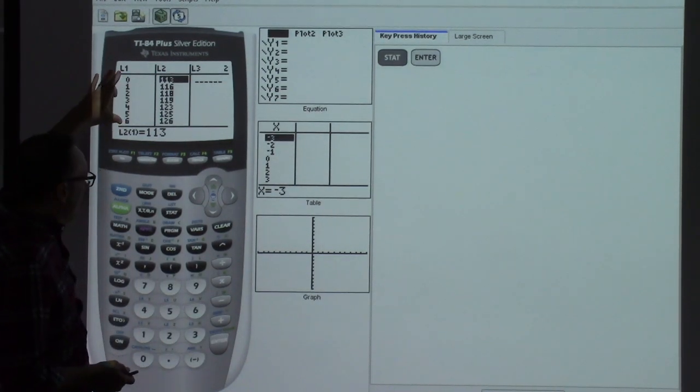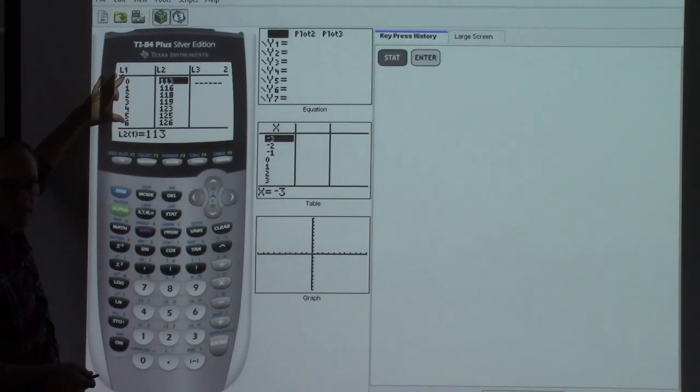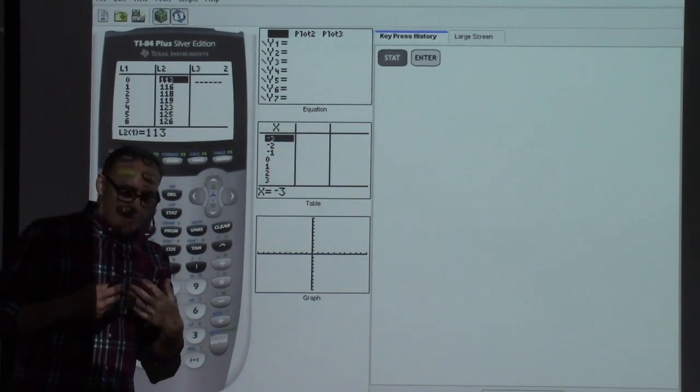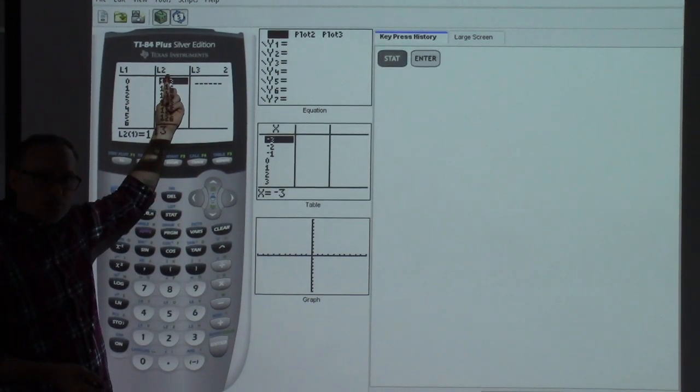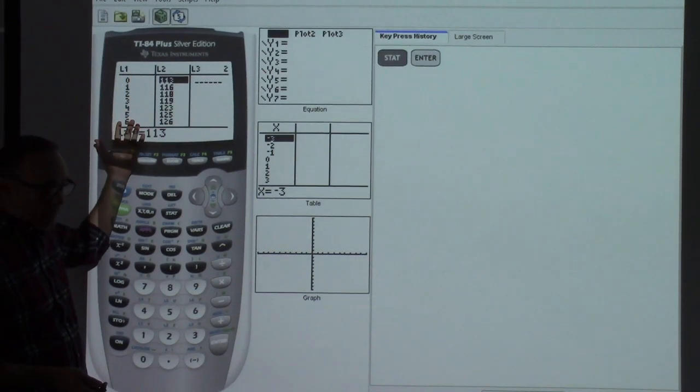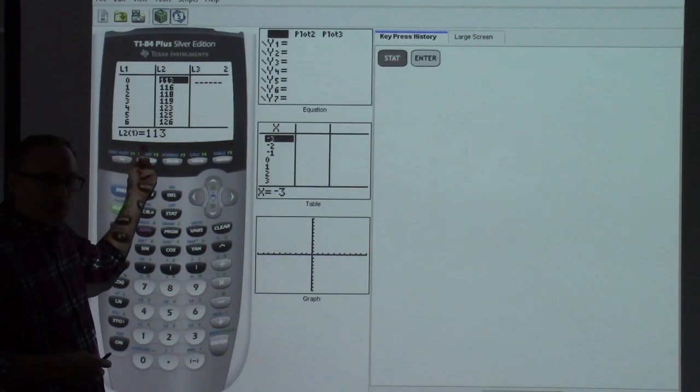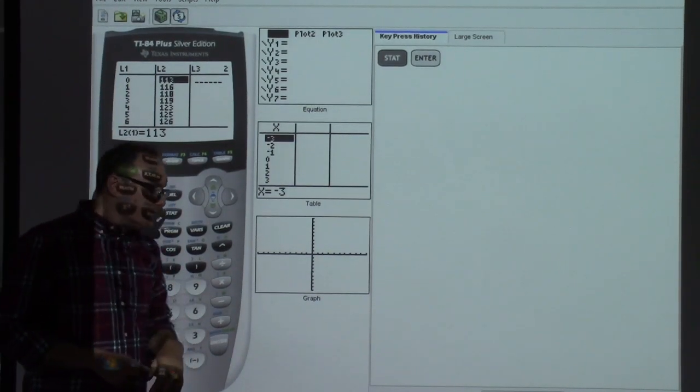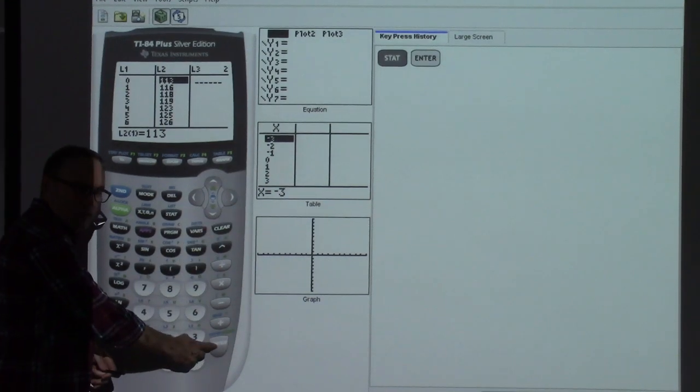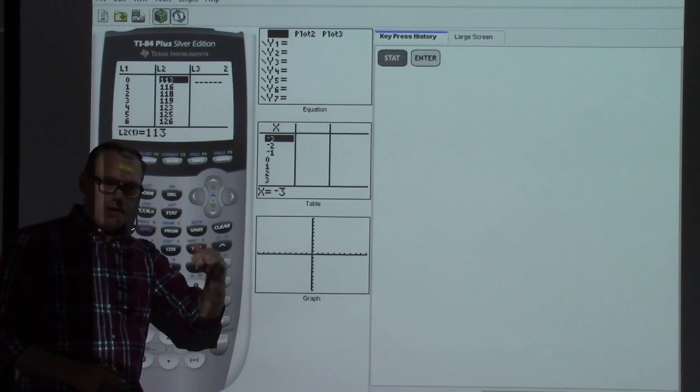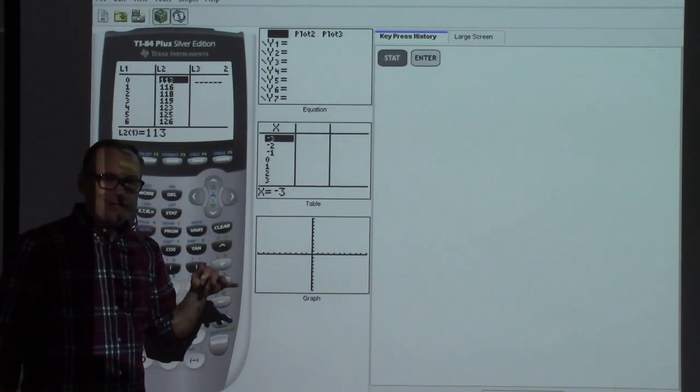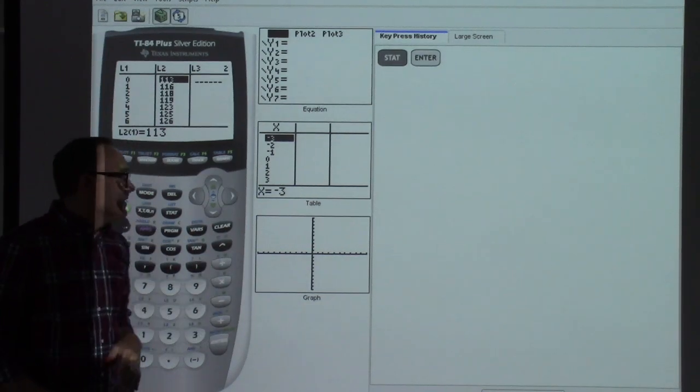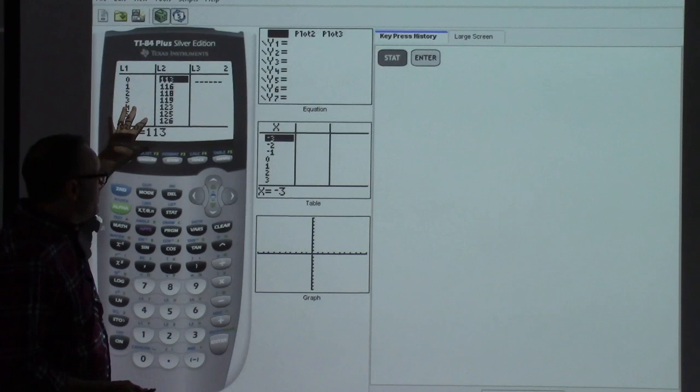The steps go on to say you're going to start in the L1 column for list one. You're going to enter those values. These are going to be the time values because we want a function that has the consumption being spit out based on the time or the year. So year is going to go first. Year 0, year 1, year 2, year 3. And we can use the down arrow, we can use the enter button, whichever one. The down arrow or the enter button that we've got to move from one row of our list to the next. Zero, down button. One, enter button. Either way, it moves you down that list.